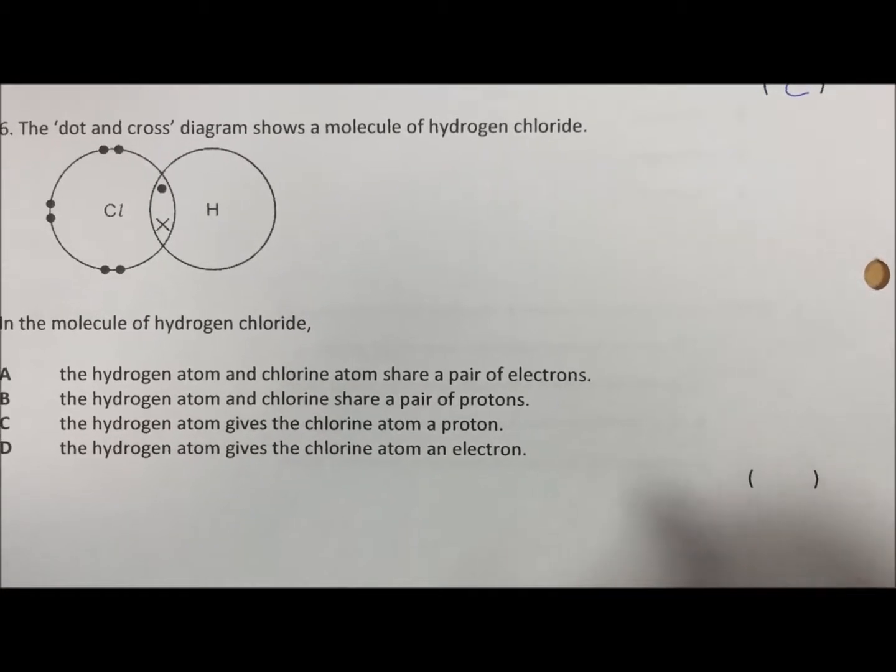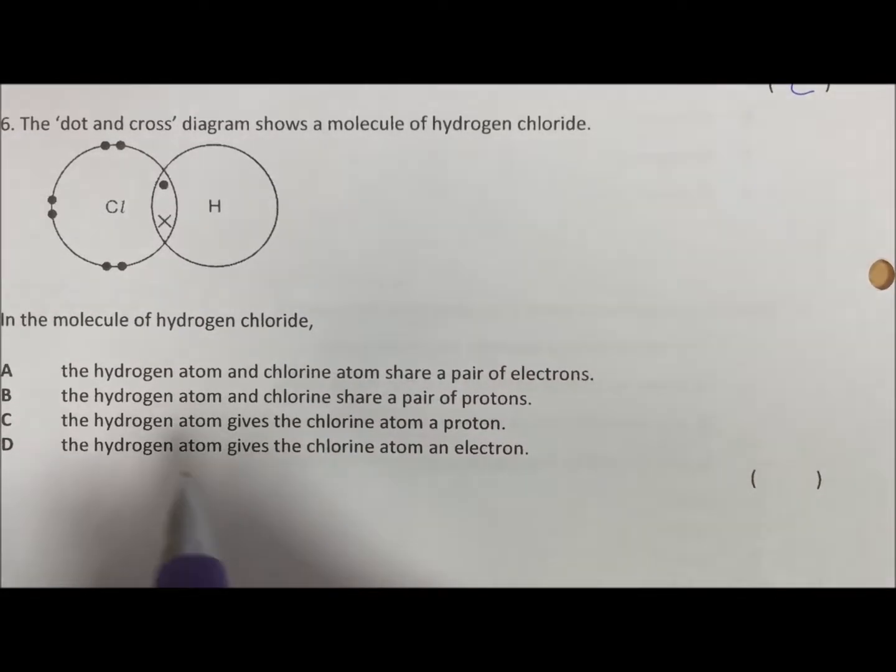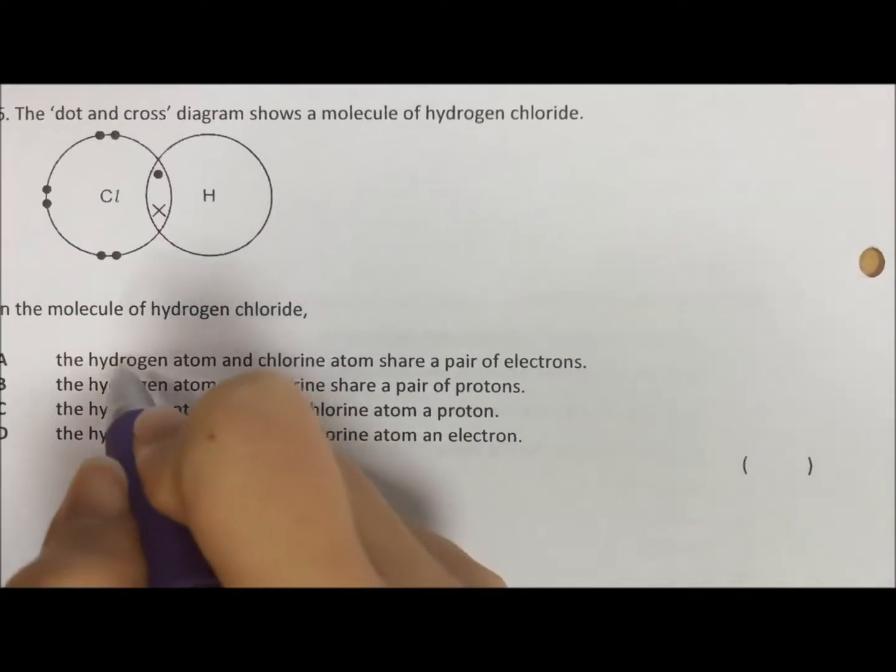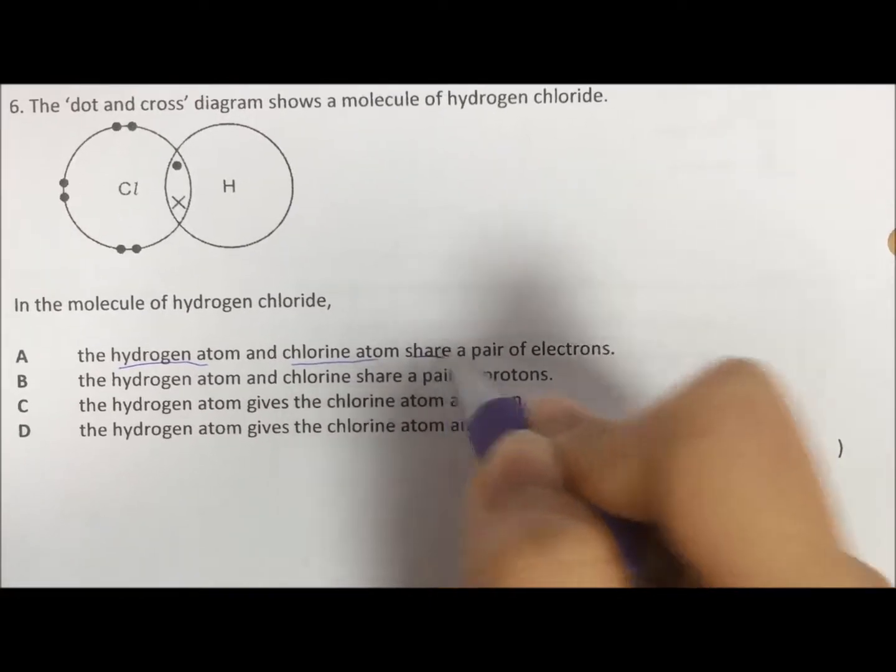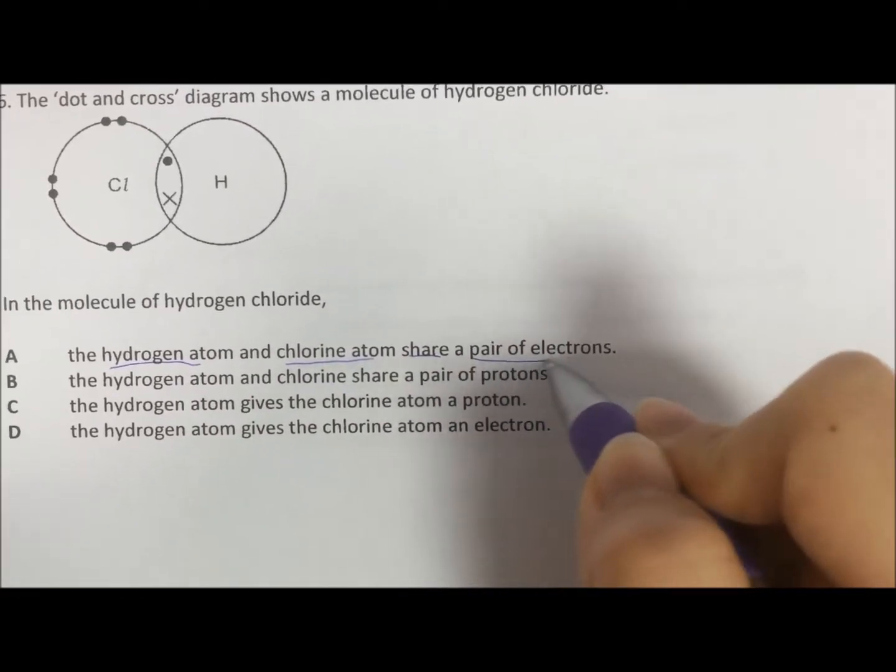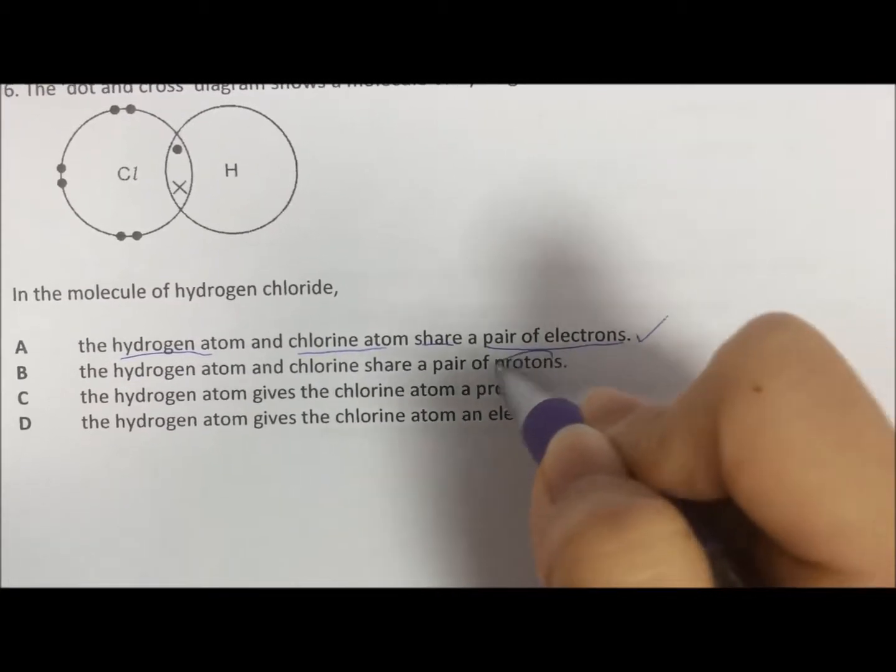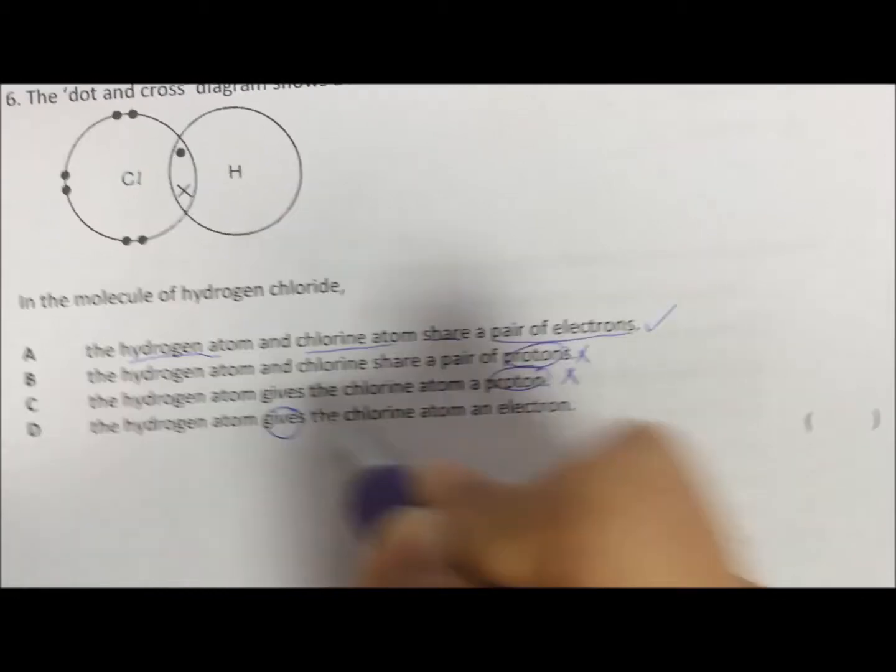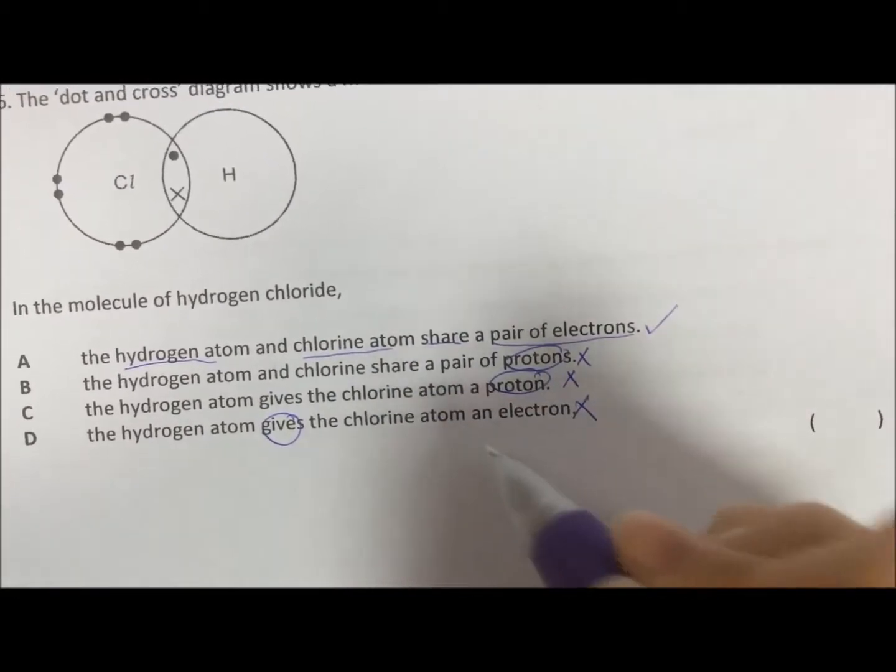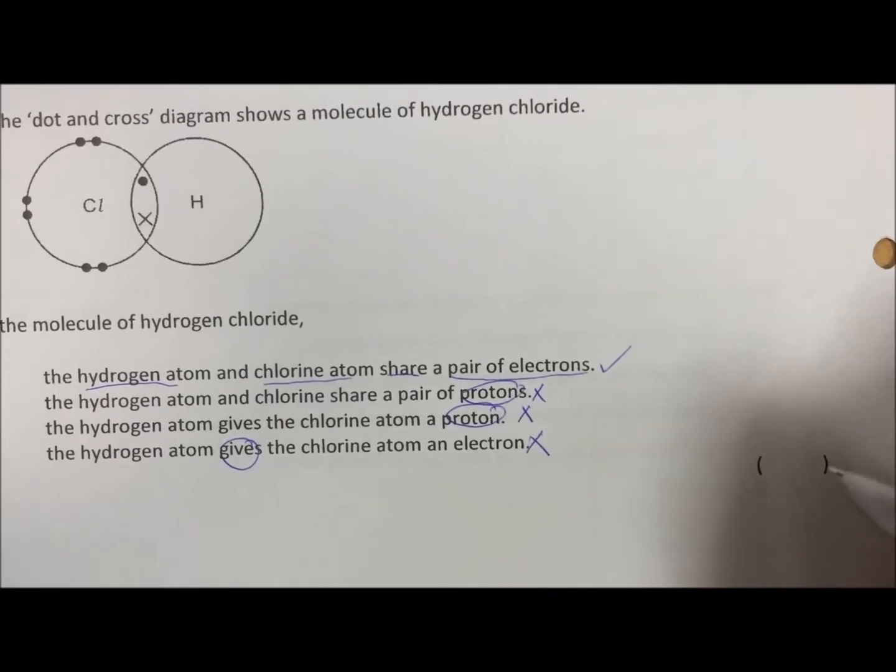Question 6, hydrogen and chlorine. Hydrogen and chlorine are both non-metals, so they will share electrons. Only electrons are being shared. B is wrong because it is proton. C is also proton. D is a transfer. Transfer is for ionic. So answer is A.